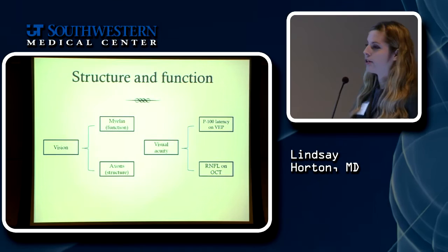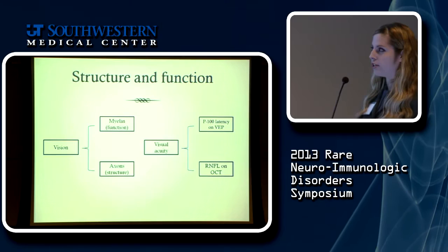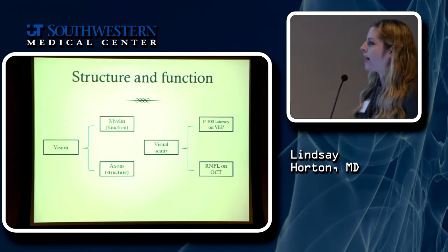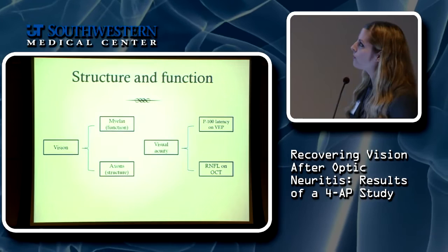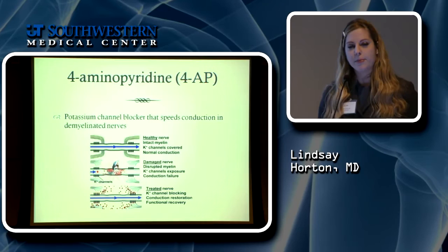Tying everything together: we're primarily concerned with vision, which we test using high-contrast and low-contrast visual acuity charts. Vision is composed of myelin — reflected in VEP function and signal speed — and axons, reflected in retinal nerve fiber layer thickness on OCT. Now the question is: is there something we can do to restore function after vision has been lost?